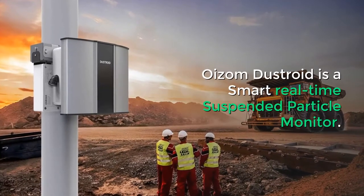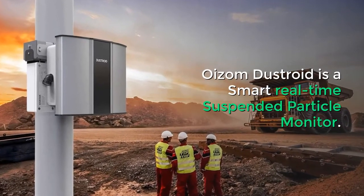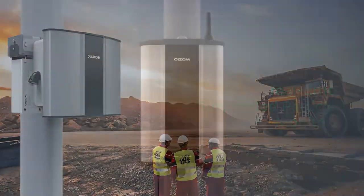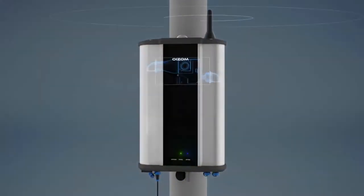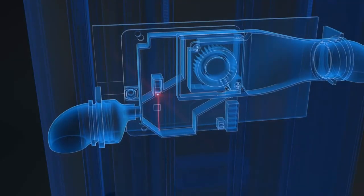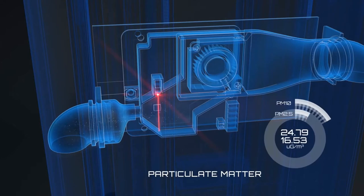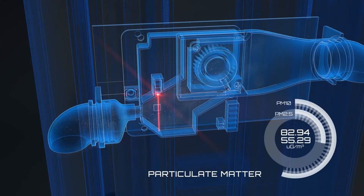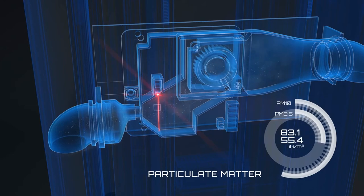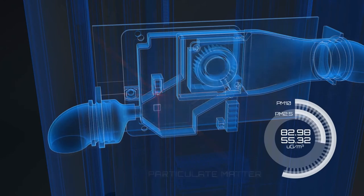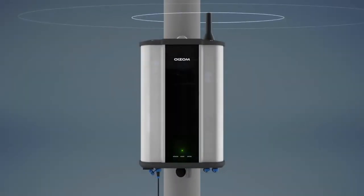Oizum Dustroid is a smart real-time suspended particle monitor. It is capable of monitoring particulate matters ranging from 1 micron to 100 microns in size. By profiling the particulates by size — PM1, PM2.5, PM10, PM100 — detailed dust analysis is possible.